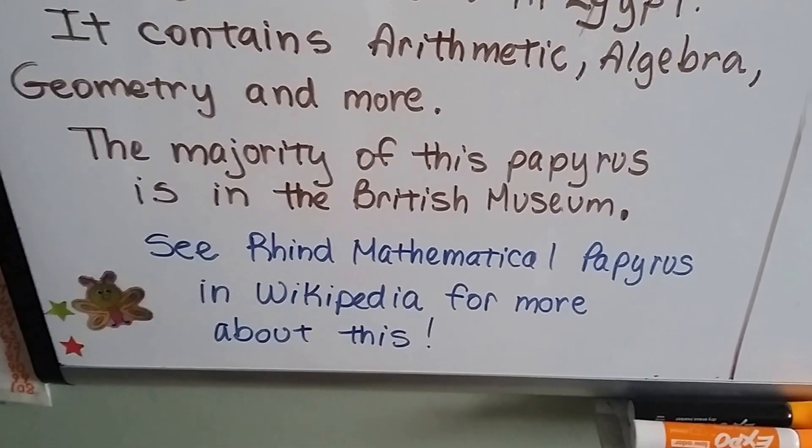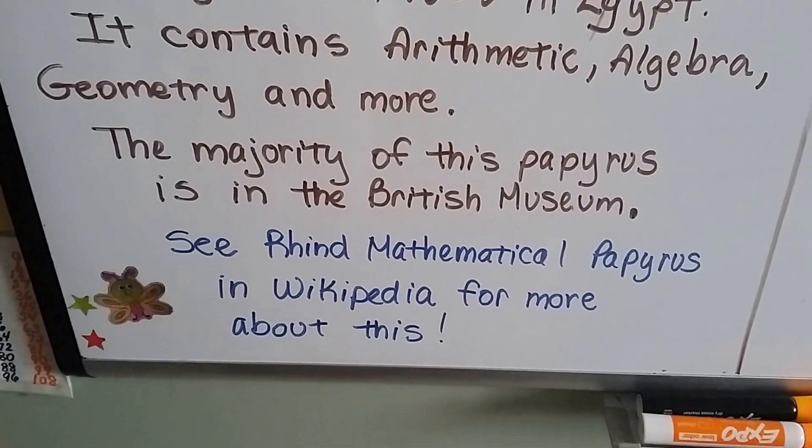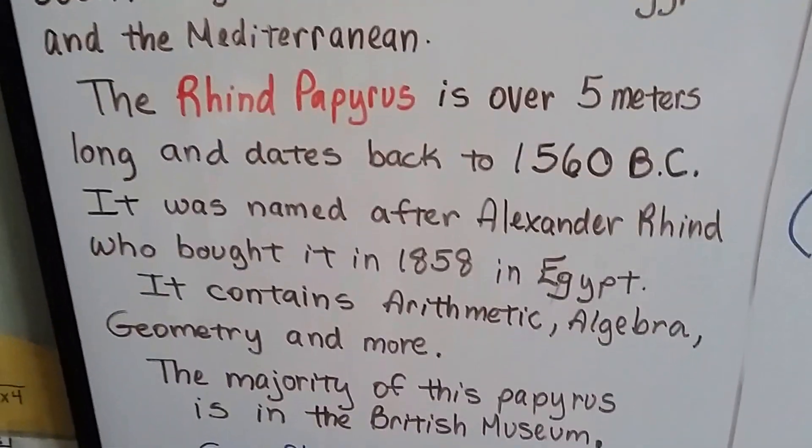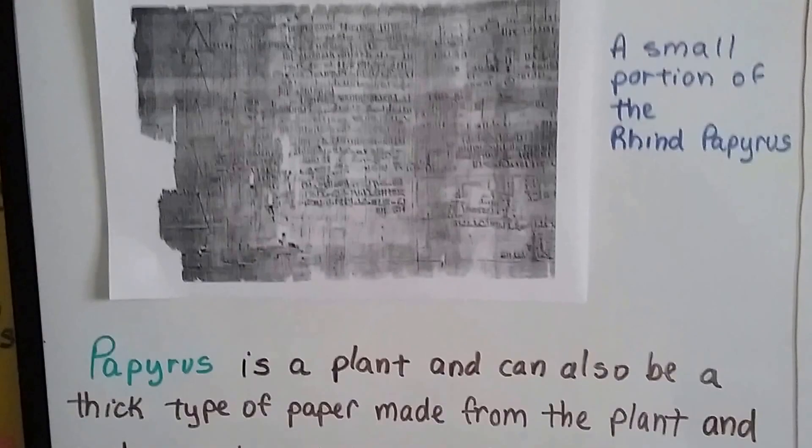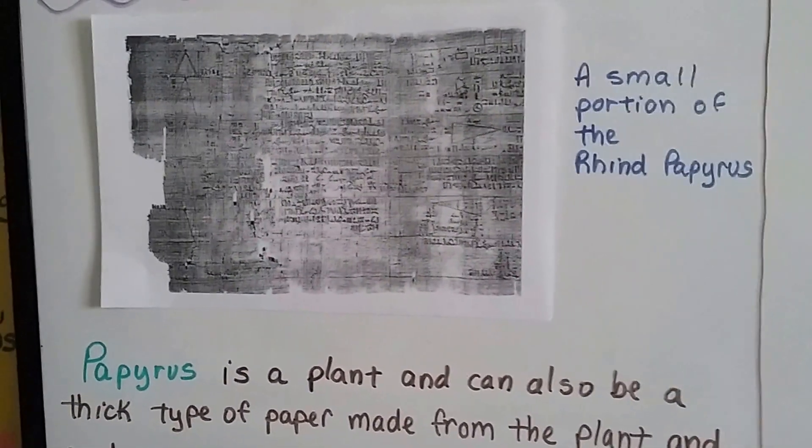Now, you can find out more about the Rhind Mathematical Papyrus by looking it up on Wikipedia. It actually has a pretty extensive story there, and it talks about how this was actually stolen out of Egypt illegally.